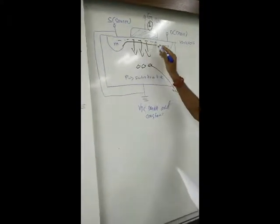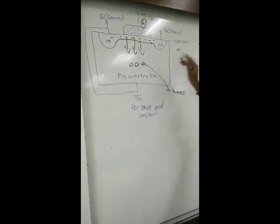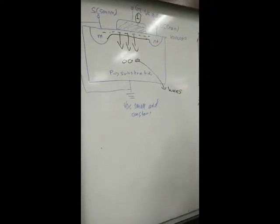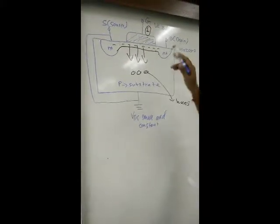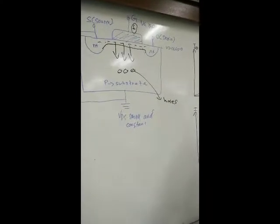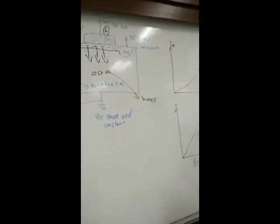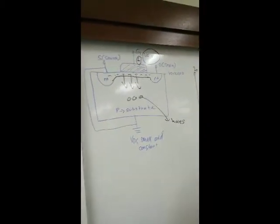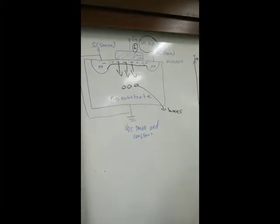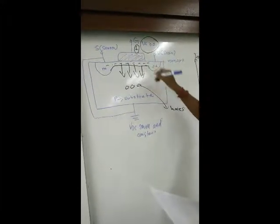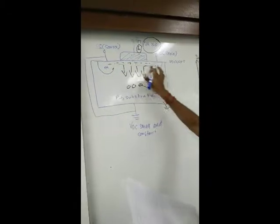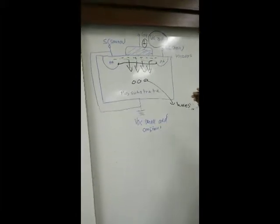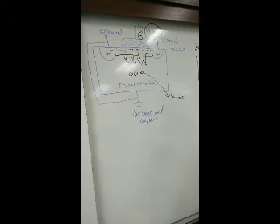Remember in P-type substrate we have extra holes. When I create potential difference across the gate, this positive voltage creates an electric field. The electric field from positive to negative forces these holes down toward the ground. At the same time it pulls electrons from the N regions and we create a channel. The electrons can move across the channel and current flows from drain to source. If I increase the voltage, I get a larger electric field and the channel becomes bigger, so current can easily flow through the channel.